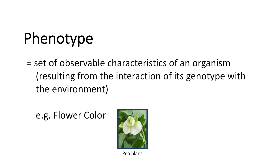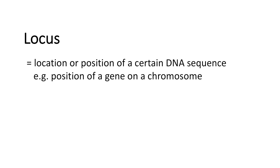As an example of the phenotype we have flower color here. We can see the pea plant has a white phenotype flower color. We will often hear the term locus.